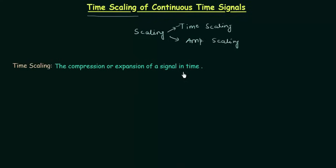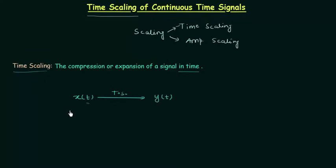The compression or expansion of a signal in time is known as time scaling, and after scaling the original signal will change. Let's say the original signal is x(t) and after time scaling the changed signal is y(t). In time scaling we multiply the time by a number alpha which is not equal to zero. So y(t) = x(αt). There are two cases.